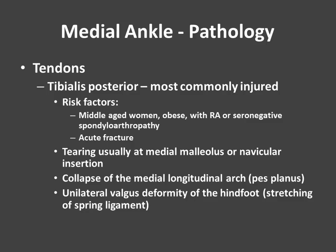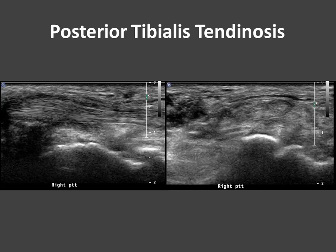Common things we can see in the medial ankle: the tibialis posterior is the most commonly injured. Risk factors include middle-aged women, obesity, and those with rheumatoid arthritis or underlying seronegative spondyloarthropathy. It can also be injured with fracturing, and tearing usually occurs at the medial malleolus or navicular insertion. This results in collapse of the arch leading to pes planus, and also unilateral valgus deformity and stretching of the spring ligament. Here's an example of posterior tibialis tendinosis with thickening of the tendon.